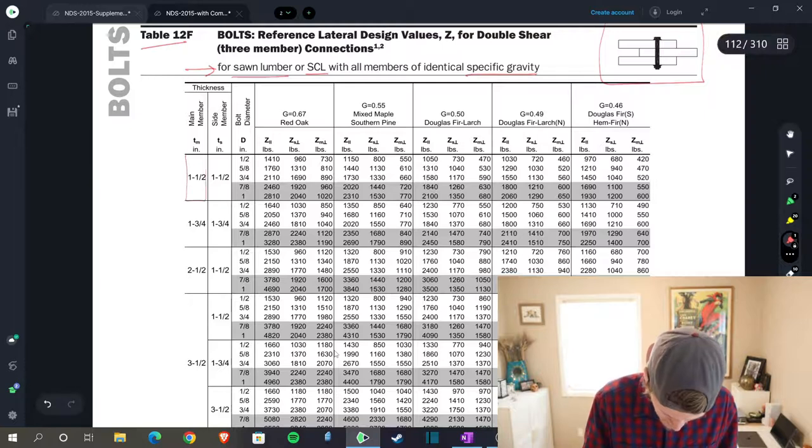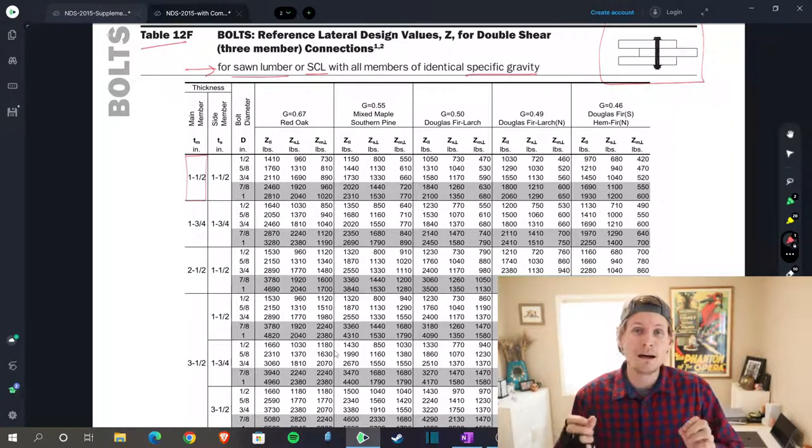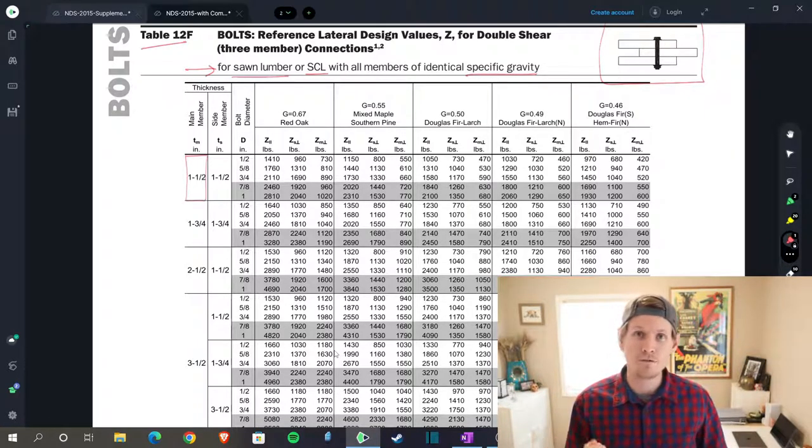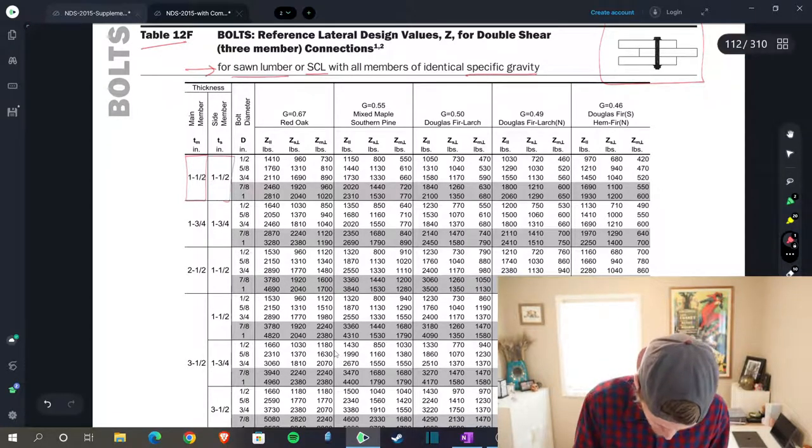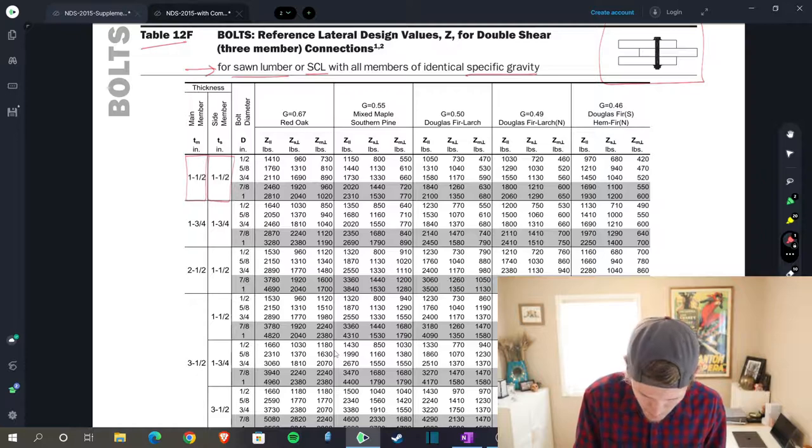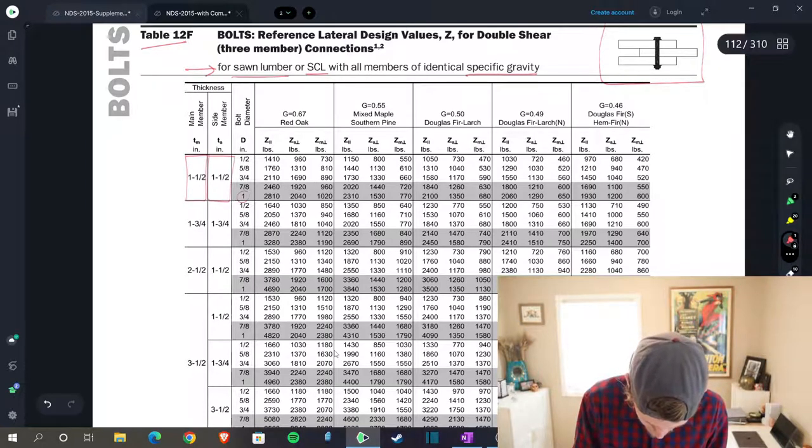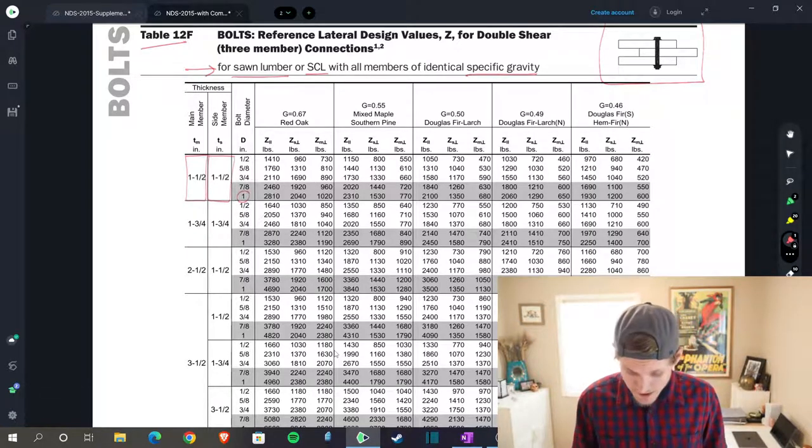Our main member we know is one and a half inches—that lands us here. Our side members—this is not both of them added together, they are asking for the thickness of your side member—so that is also one and a half inches. You have your bolt diameter which is one inch, right there.